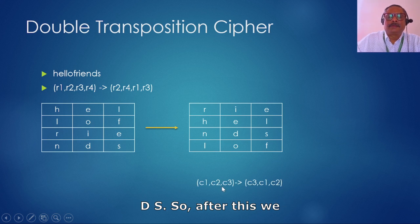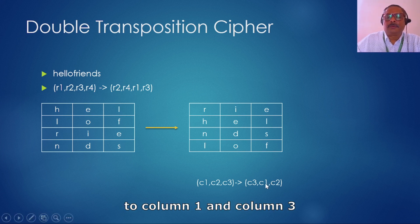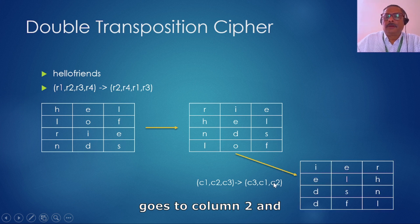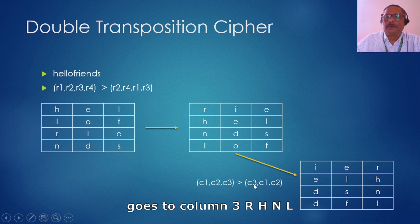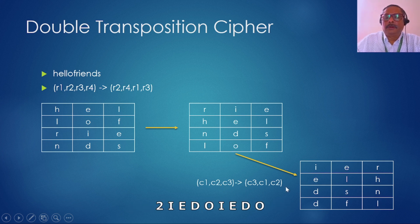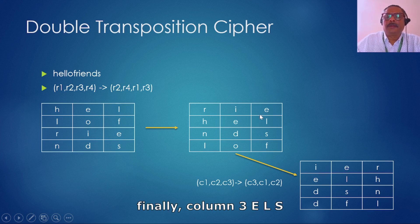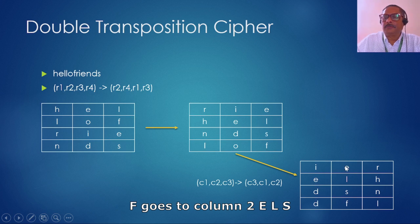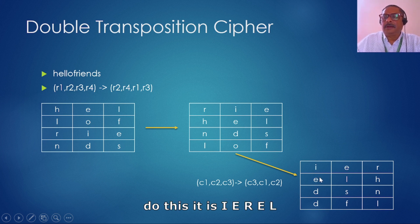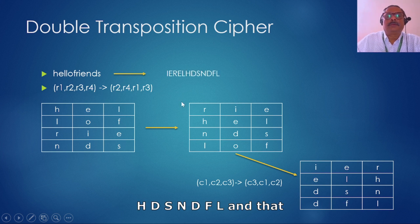After the row changes, we make the column changes: column 1 goes to column 3, column 2 goes to column 1, and column 3 goes to column 2. So column 1 'r h n l' goes to column 3, column 2 'i e d o' goes to column 1, and column 3 'e l s f' goes to column 2. Reading the result: 'i e r e l h d s n d f l' — that's the ciphertext.